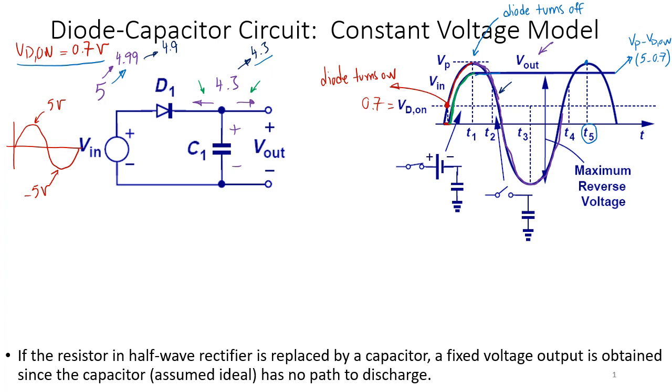Great, so basically when the diode is on, which is the first quarter cycle of the first cycle of my sinusoidal, I have a circuit that charges up my capacitor to 4.3 volts. This charges up the cap to 4.3 volts which is V_peak minus VD_on.